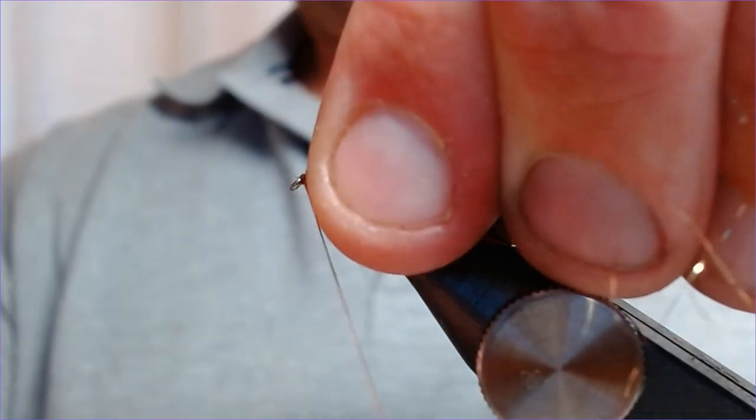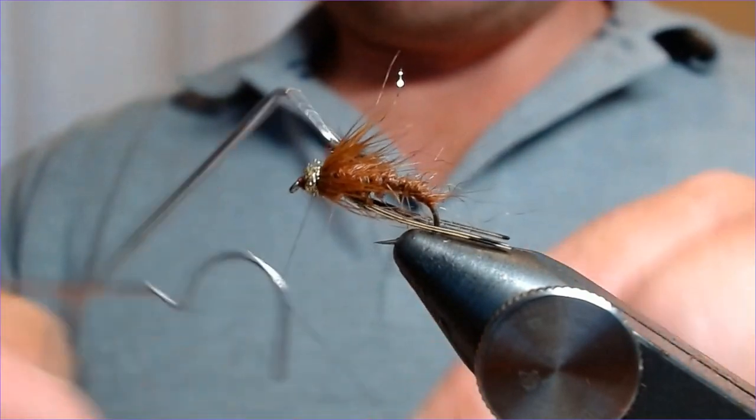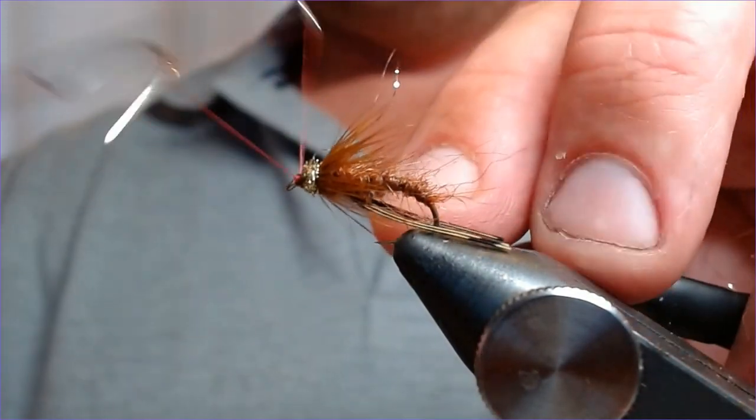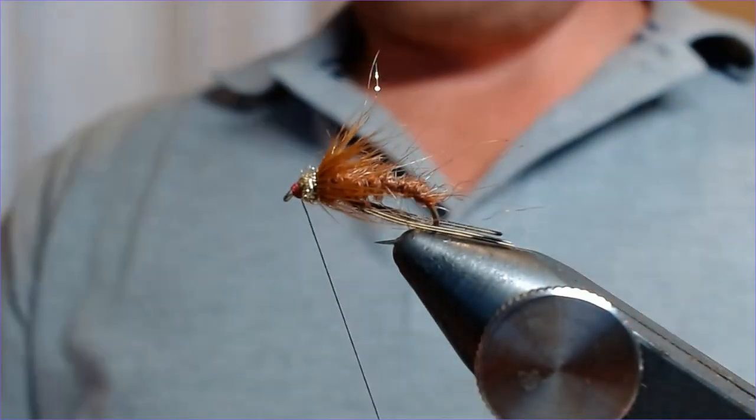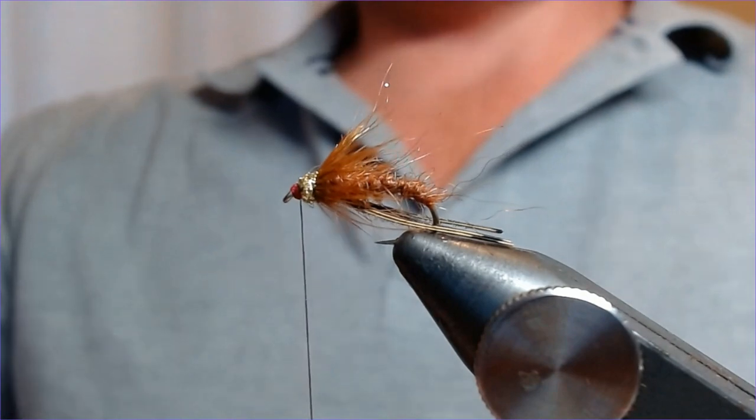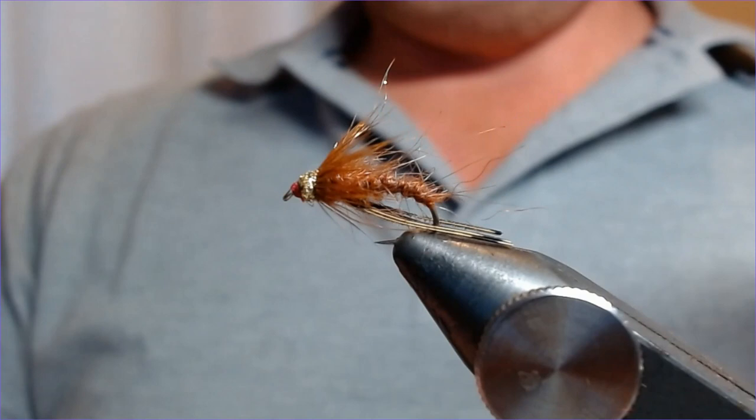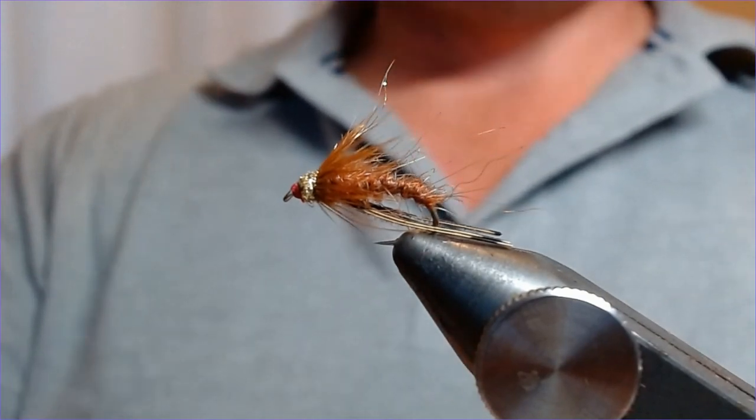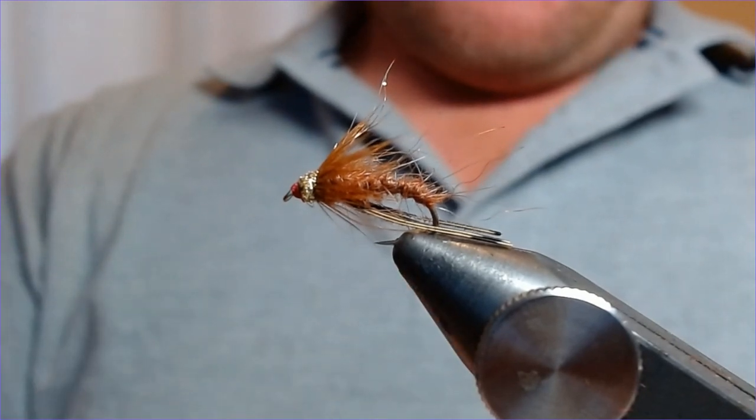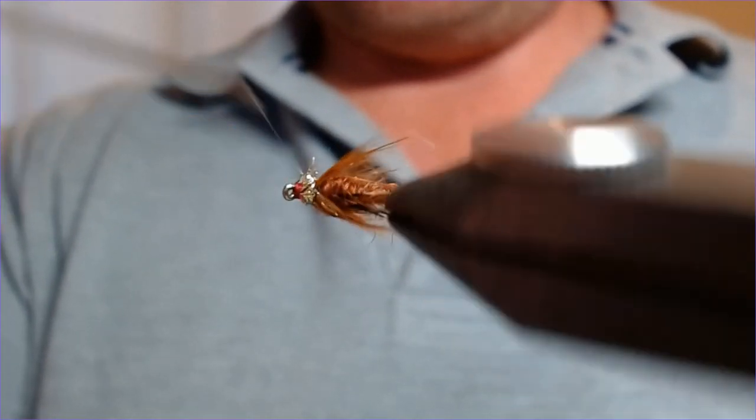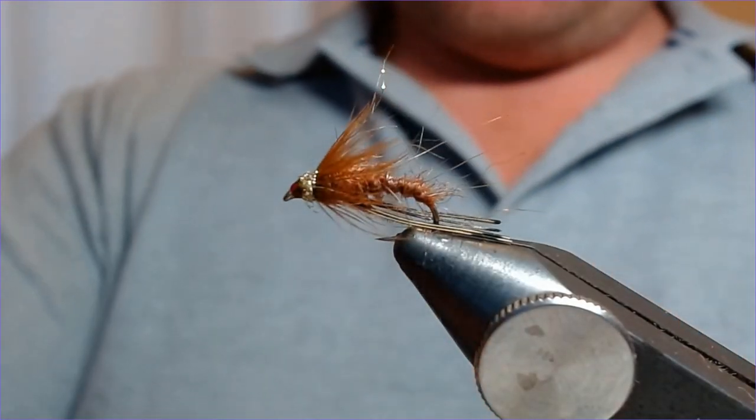That's lovely. We're just going to finish that off now. That's us, that's all we need to do to that. Just finish that off with finishing knot. Trim the thread off. We'll drop a varnish on there just to secure it.